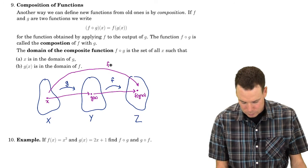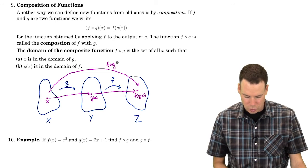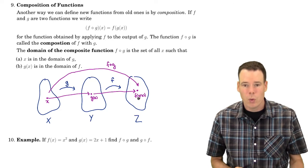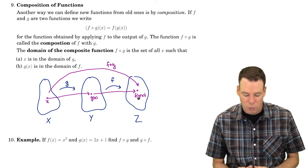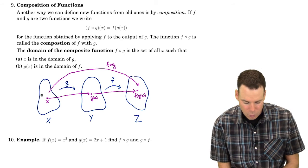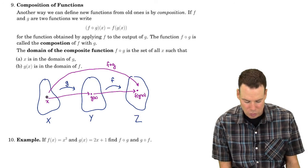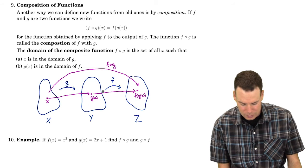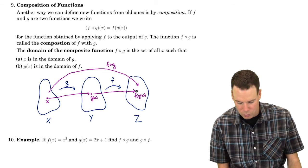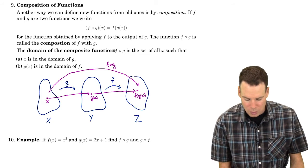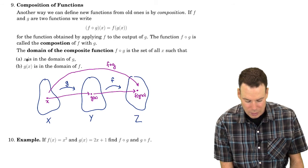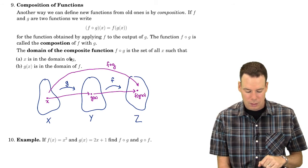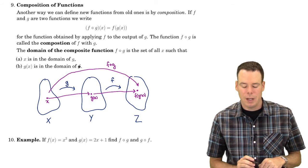This function is what we call the composition, which starts from the set x and ends up in the set z. The domain of the composition is the set of all x for which the entire journey makes sense: x must be in the domain of g, and then the output g of x must also land in the domain of f in order to continue on.